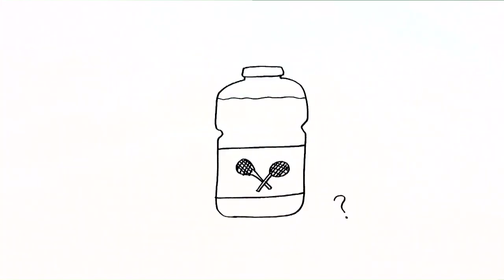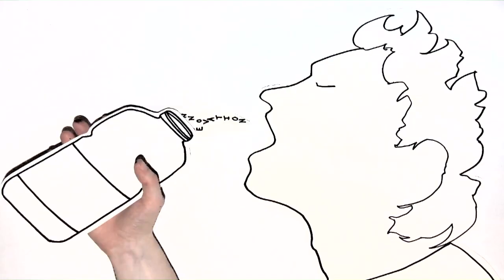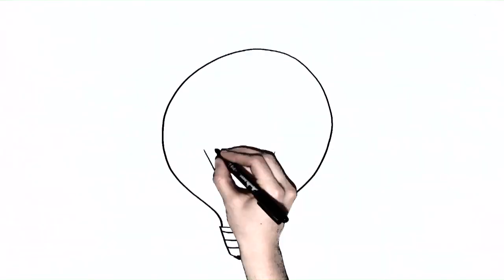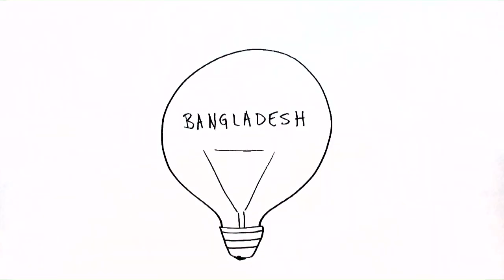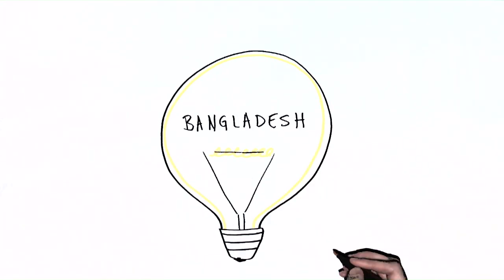Ever have a sports drink after a workout? When you do, you're replenishing yourself with a product of reverse innovation. The combination of carbohydrates and sugar in a salt solution that makes sports drinks work was first used to fight dehydration in Bangladesh.